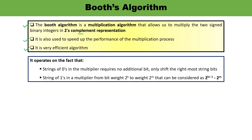This algorithm operates on two key facts. First, a string of zeros in the multiplier requires no additional operation — only a shift of the rightmost string bits. Second, a string of ones in the multiplier from bit weight 2^k to 2^m can be represented as 2^(k+1) minus 2^m.